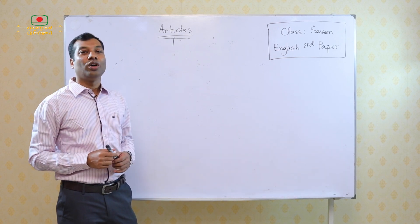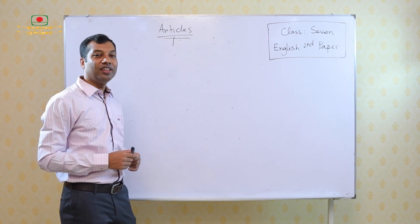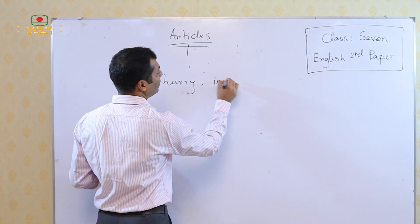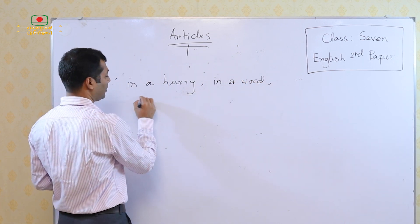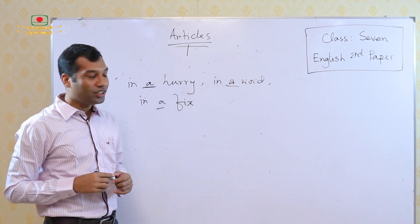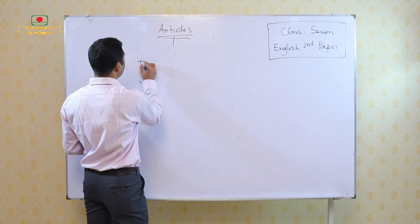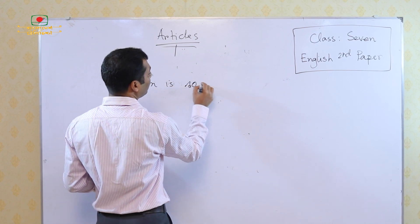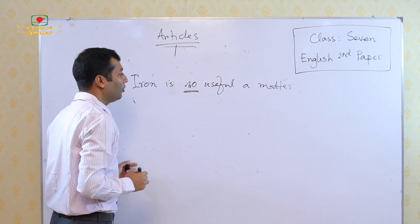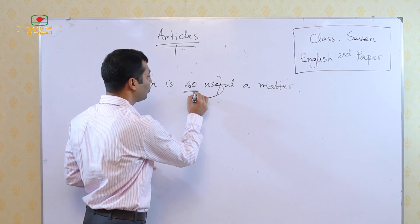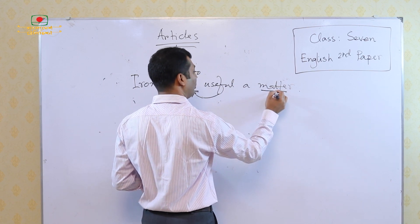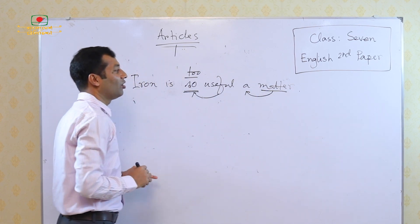Now we have to know some special uses of the article A or AN. In some special phrases, the article A is used — for example: in a hurry, in a word, in a fix. These are common phrases where you must use the article A. Also, in sentences like 'Iron is so useful a matter' or 'It is too useful a matter' — if before the adjective you use 'so' or 'too', the article A or AN comes after the adjective and before the noun.